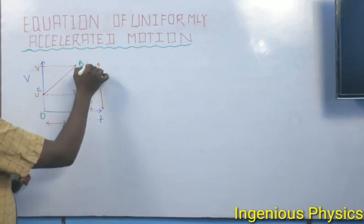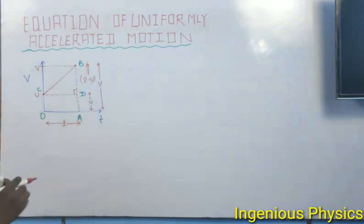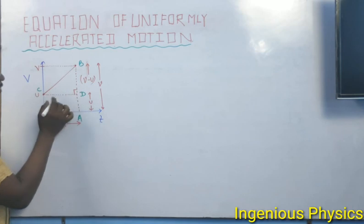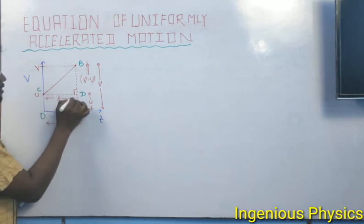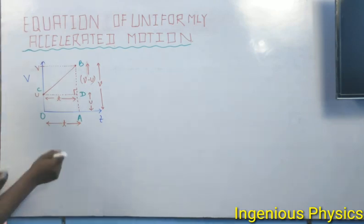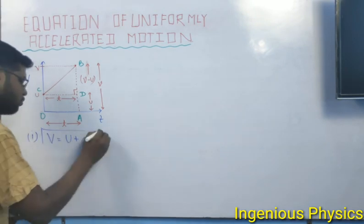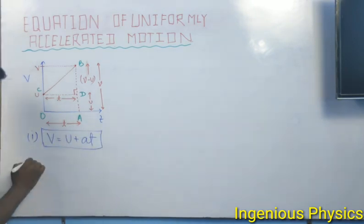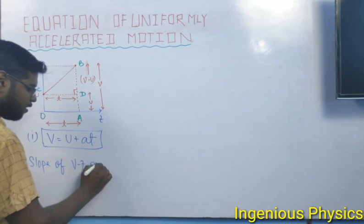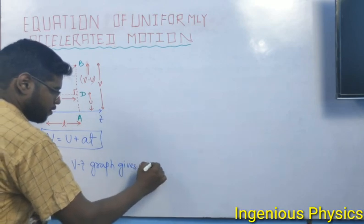We can see that at points B and D, the difference V minus U appears. Now starting all calculations: the slope of the velocity-time graph gives acceleration. We have the first equation to prove: V equals U plus AT.